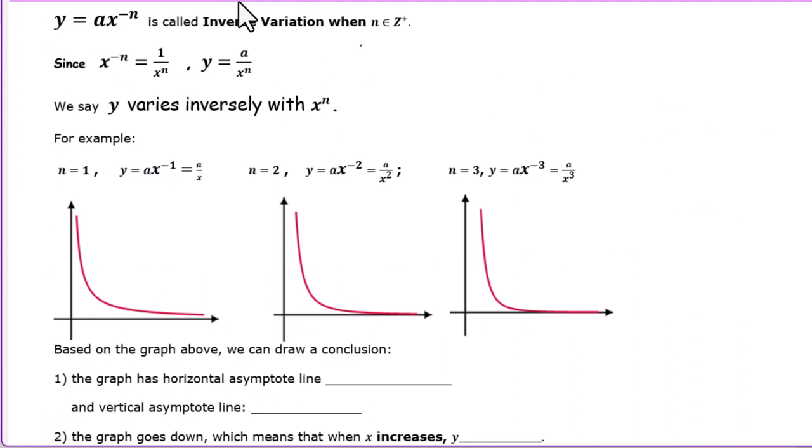We can write inverse variation as y equals a times x to the nth power where n is negative, or equivalently y equals A over x to the nth power.